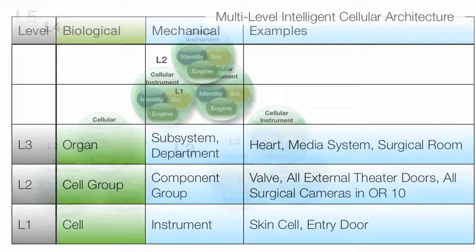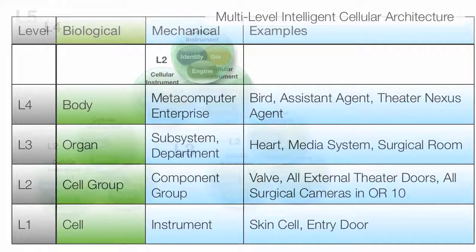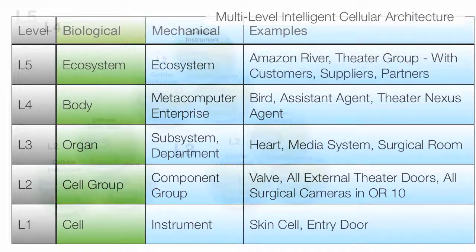And a surgical room, for example, could have different lighting systems, could have different imaging systems. All of those come together to create an L3 entity, and that could be part of a larger hospital or the audio visual system can be part of a larger theater, intelligent theater, or a bird is a level four system. We are level four systems. The assistant agent that'll help you in your mobile and do everything you need it to do. That's a level four entity.